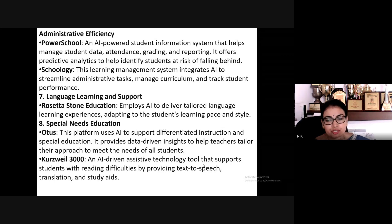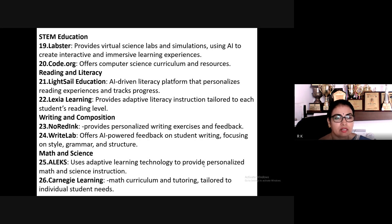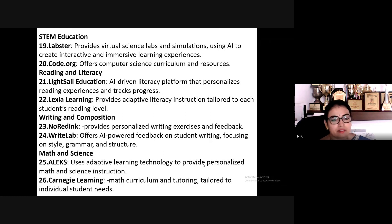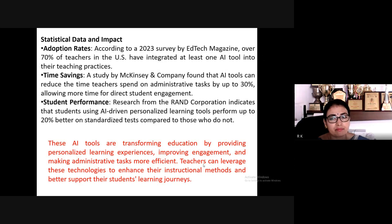There is also Kurzweil 3000, an AI-driven assistive technology tool that supports students with reading difficulties by providing text-to-speech, translation, and study aids. Other tools include Labster, Code.org, Carnegie Learning, and Lightsail Education — a literacy platform that personalizes reading experiences. A study by McKinsey found that AI tools can reduce the time teachers spend on administrative tasks by up to 30 percent, allowing more time for direct student engagement.